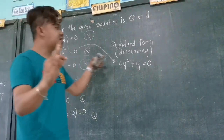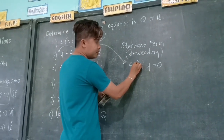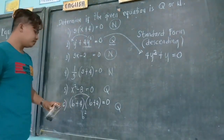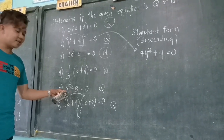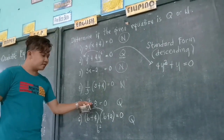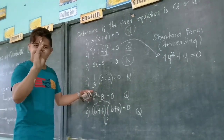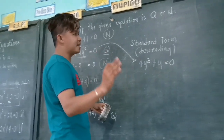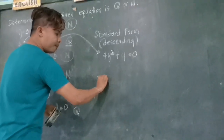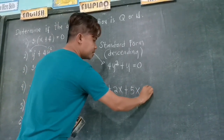Again, when we say standard form, the degree is descending from the highest to the lowest. For example, number 5 — is this in standard form? Yes. This is x squared minus 8 equals 0, which is standard form without a linear term. Now, I will give you another example: write the standard form of 2 plus 2x plus 5x squared.